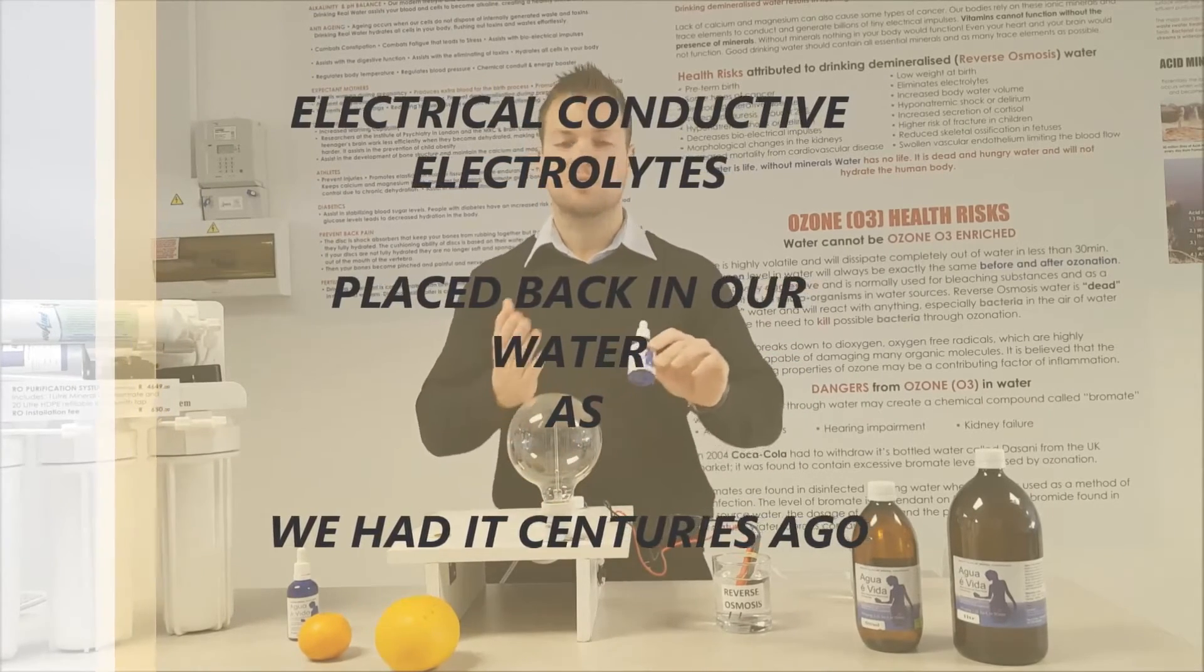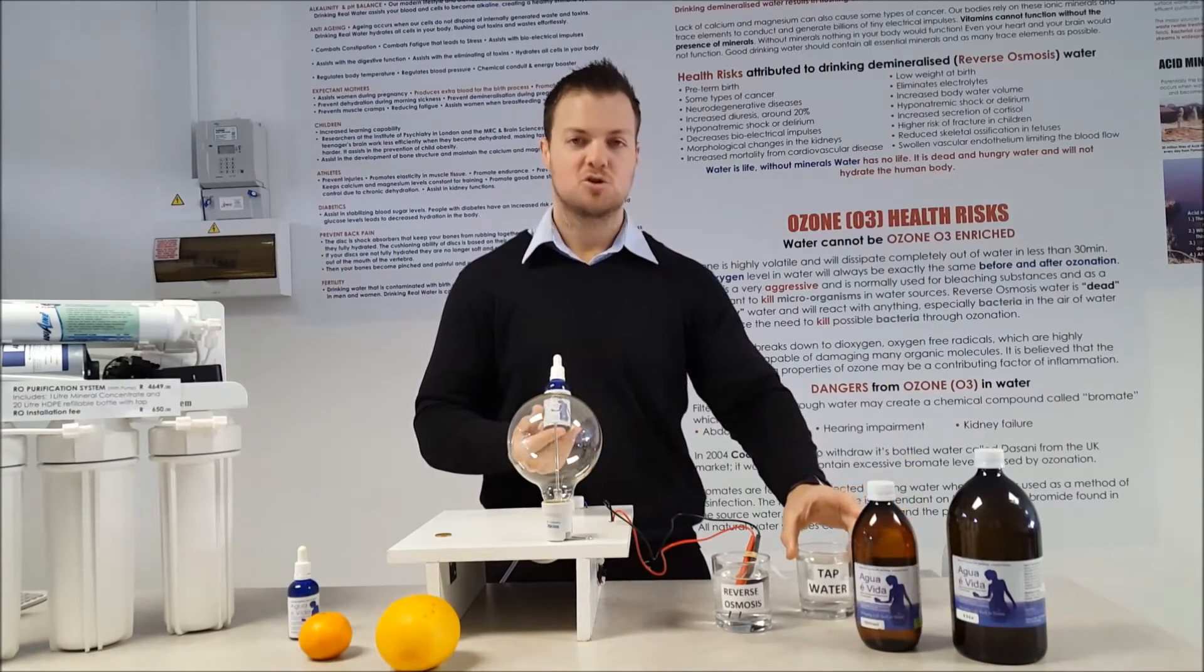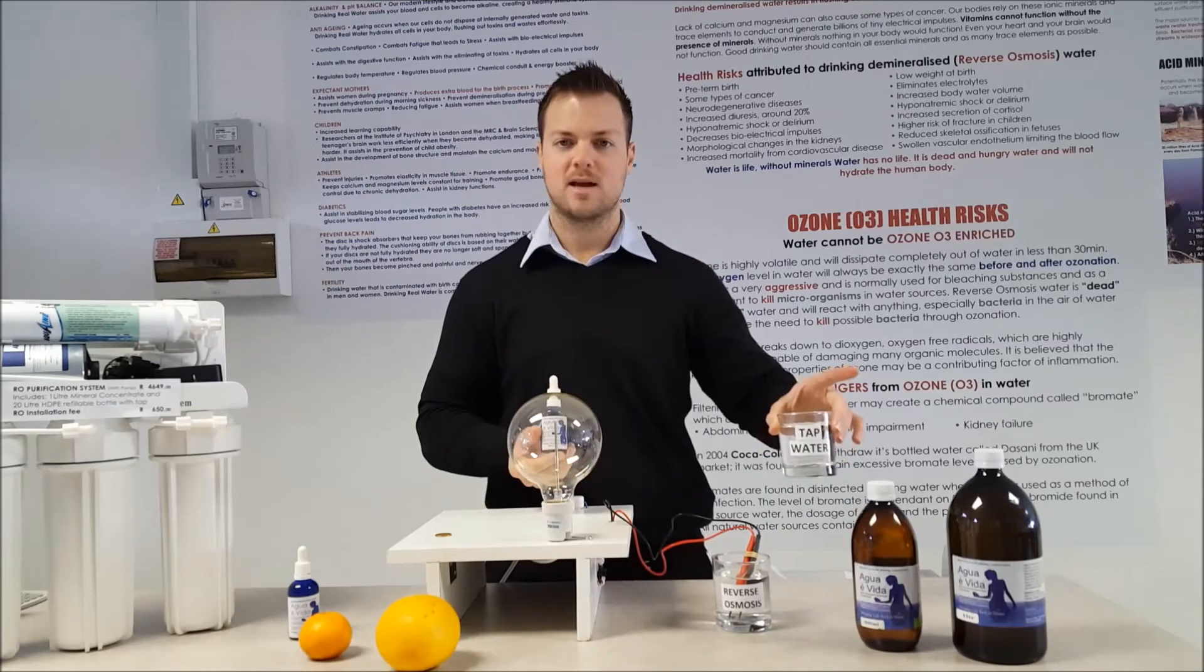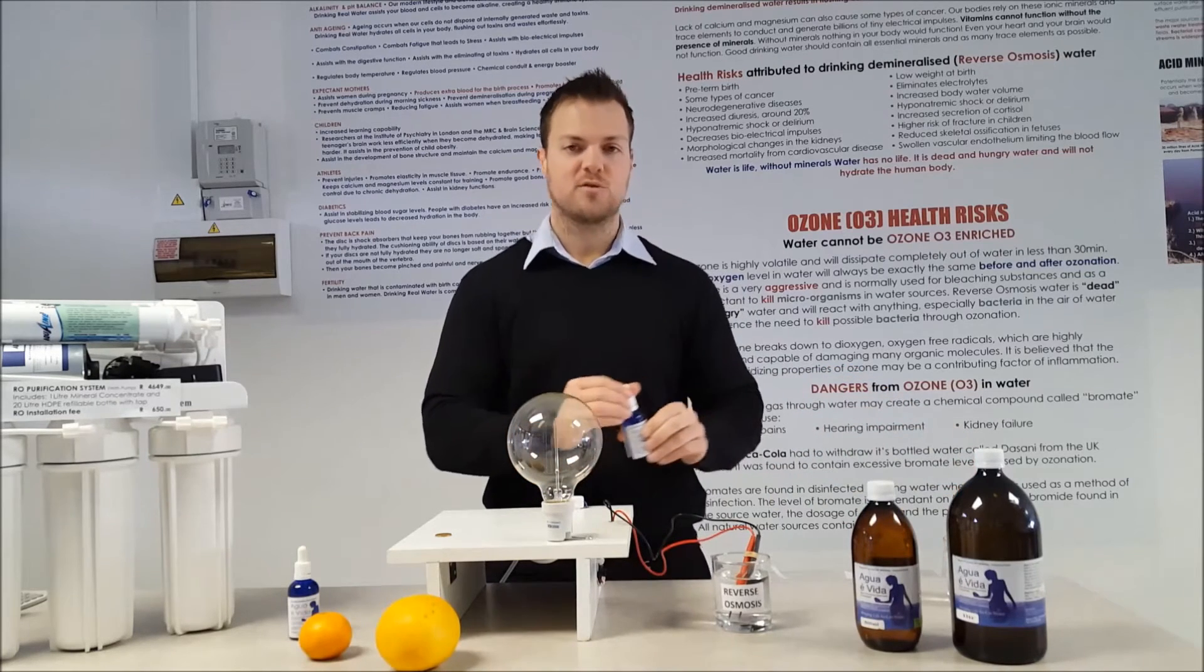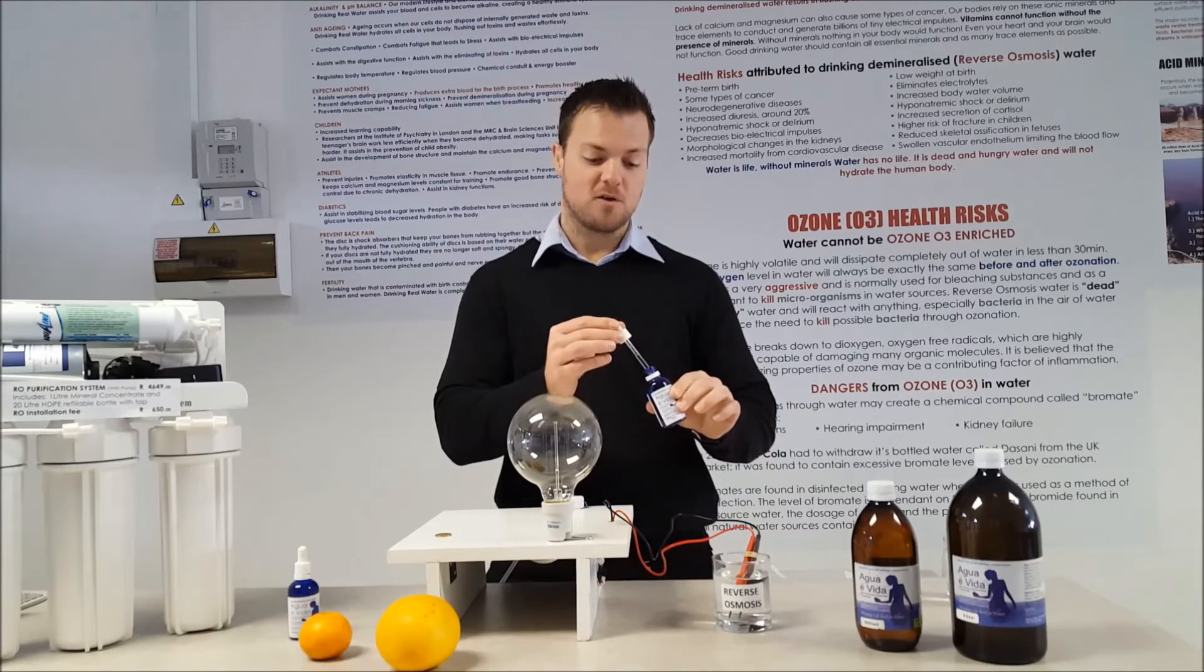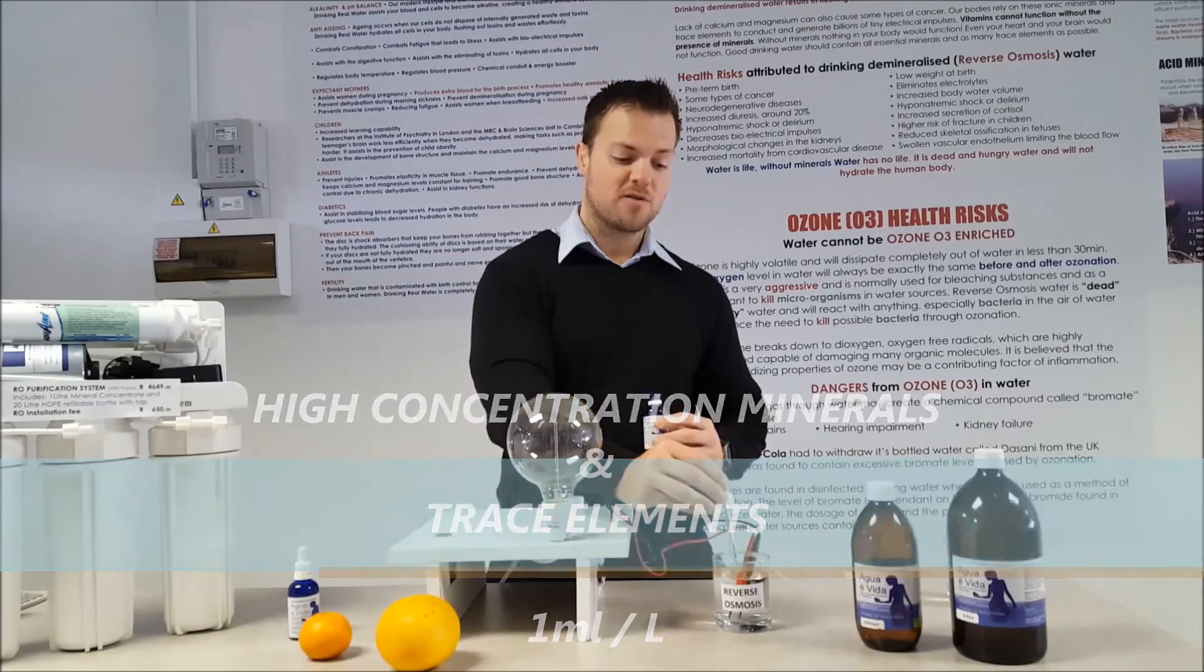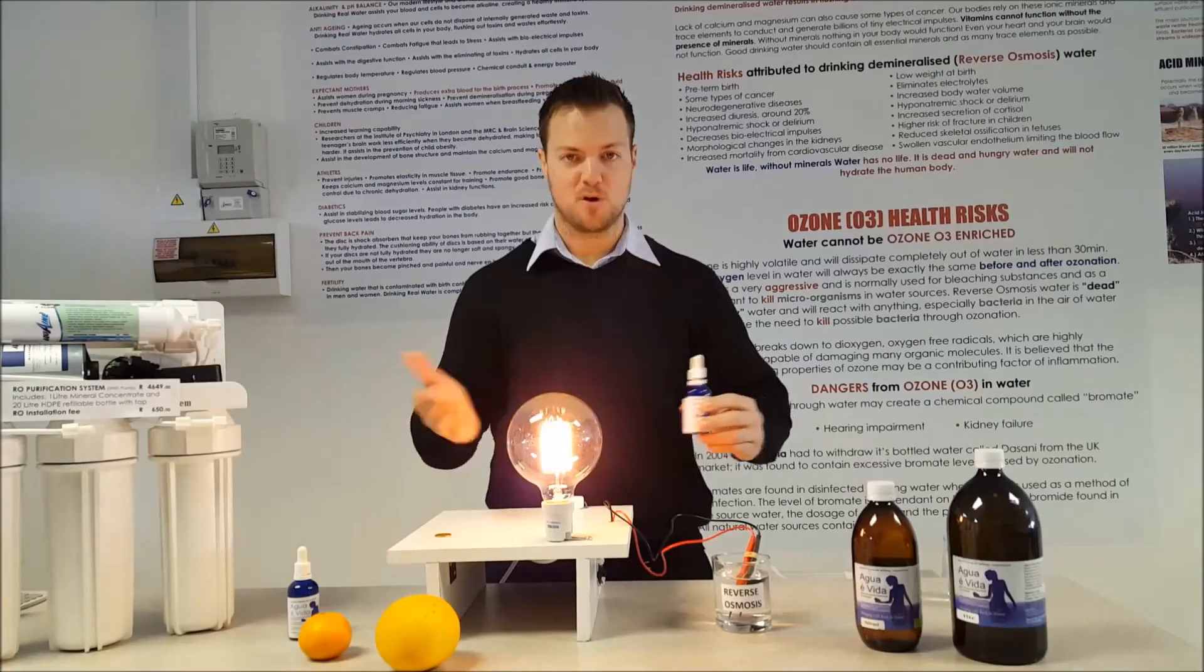The question is why not just put the minerals and trace elements into tap water. The truth is it doesn't really help if you put something clean into something dirty because you still want to get the dirt into your body and that is unacceptable. What we do is we place one milliliter of concentrate, all minerals and trace elements, into one liter of reverse osmosis water. Because of the high concentration of the minerals and trace elements we now have perfect conductivity.